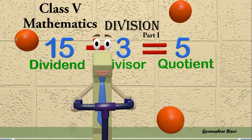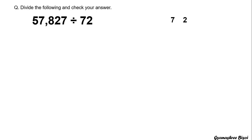Hello my dear children, welcome to class 5 mathematics. Today's topic is division. Divide the following and check your answer: 57,827 divided by 72. The number which is being divided is called the dividend and the number which divides is called the divisor. So here the dividend is 57,827 and 72 is the divisor.